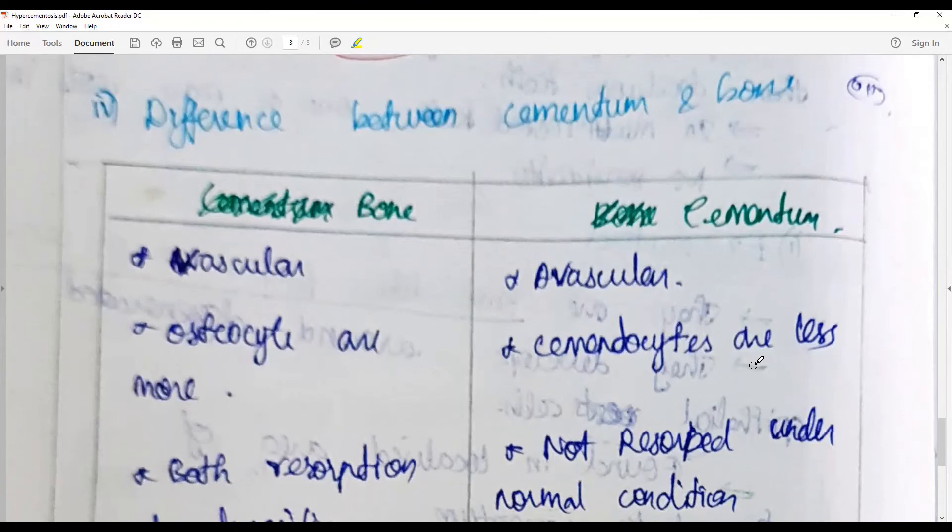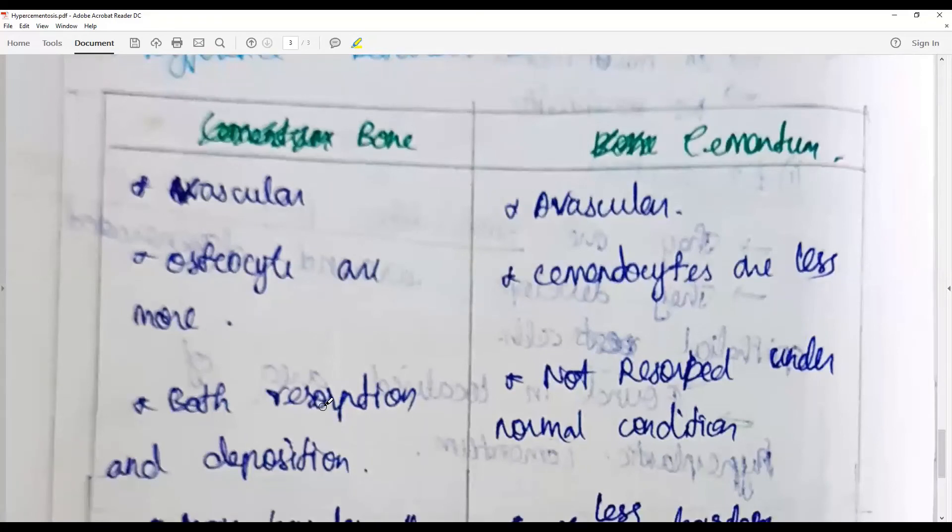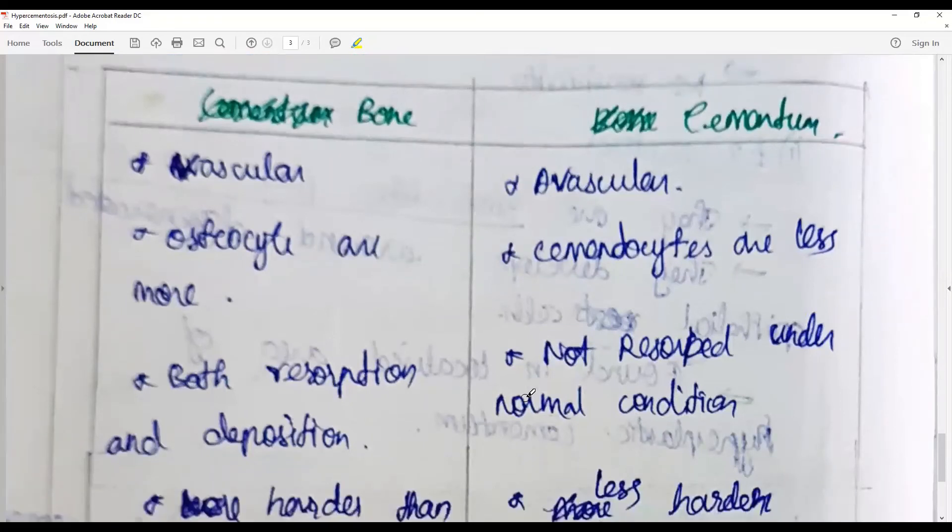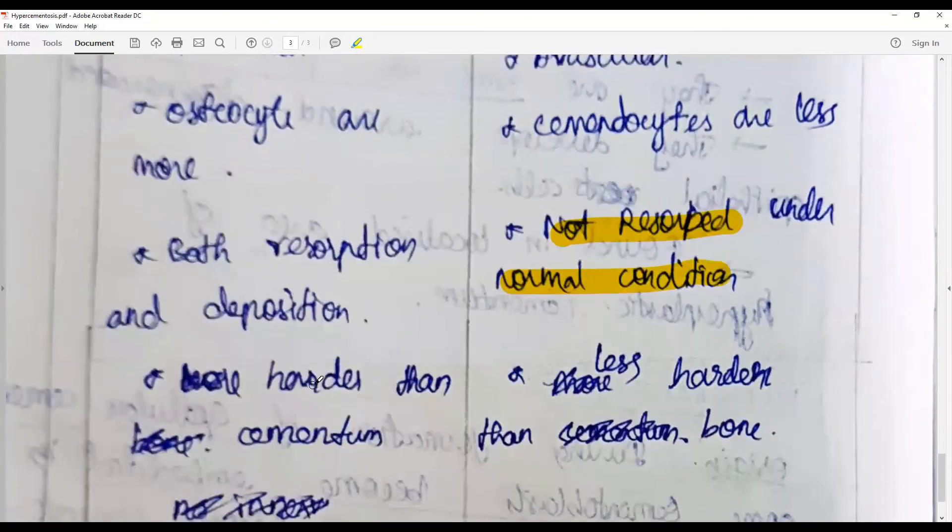Bone is a dynamic structure having both areas of resorption and deposition going on continuously. Cementum is not a dynamic structure; it is a static structure. They are not resorbed under normal conditions, only under pathological conditions. Bone is harder than cementum because cementum has more organic component.